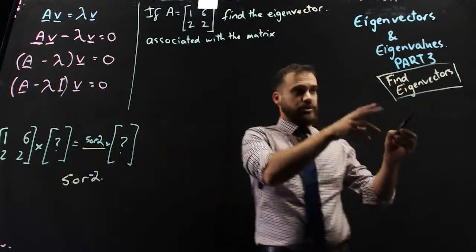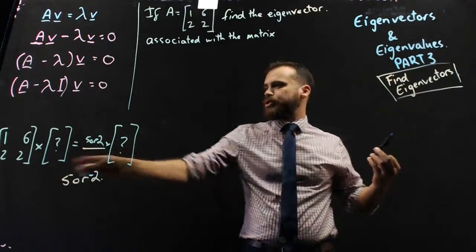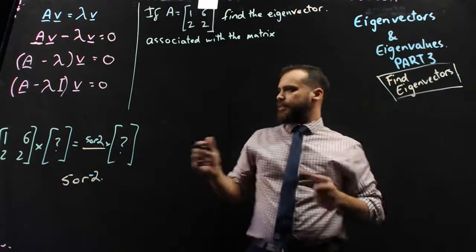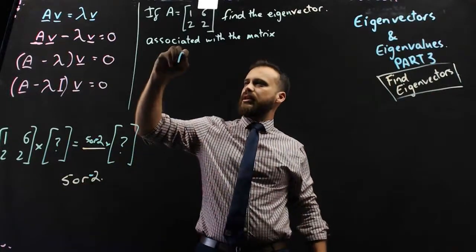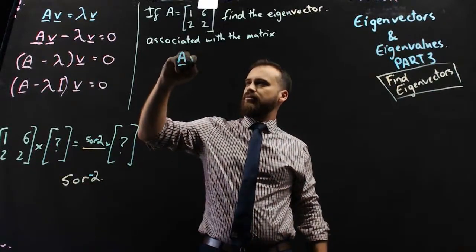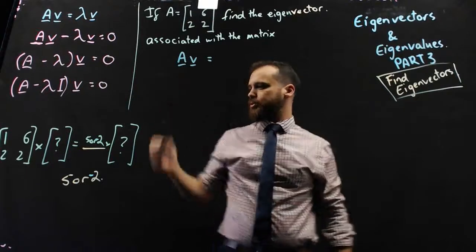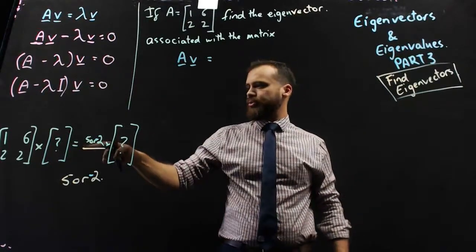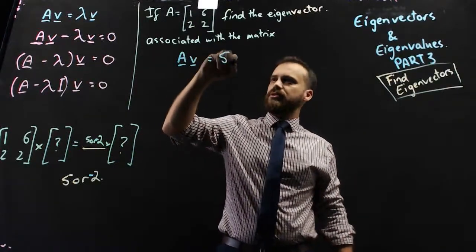So in this one we're going to find whatever that question mark eigenvector is. So I can take this now and I can say that Av will be equal to, let's go with the first one, 5 times v.